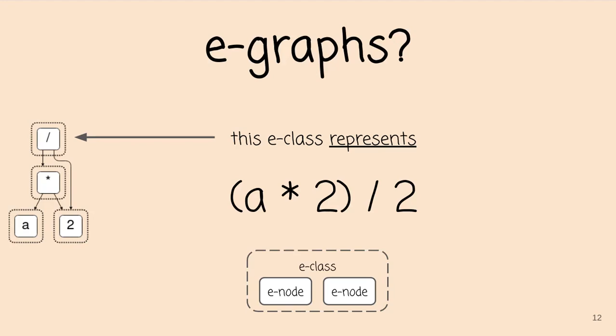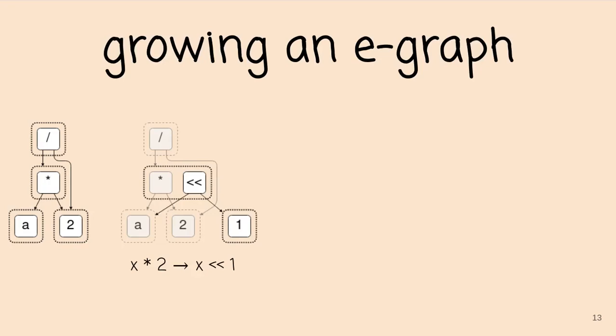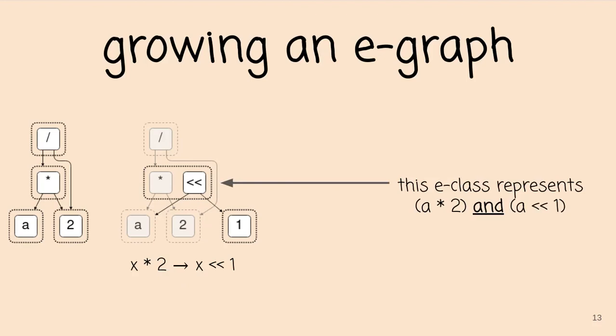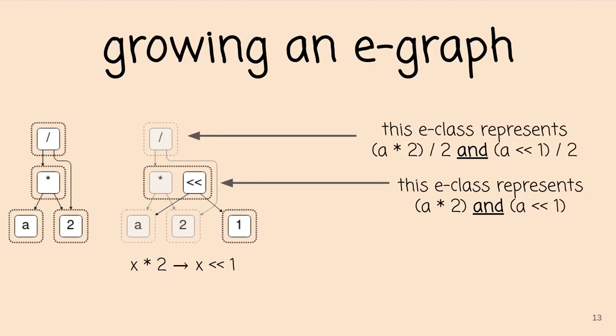We can grow the E-graph by applying rewrite rules. Here's our strength-reduction rewrite: we search for x times two, find a times two, generating a substitution binding a to x, and apply it to the right-hand side. Instead of destructively rewriting like in a normal term rewriter, we add the result into the same E-class as a times two. So we're adding the shift operator into the same E-class as the times operator, because these are equivalent subterms. Now this E-class represents both ways to write that subterm, and going up, the division operator now represents two ways to write the entire term.